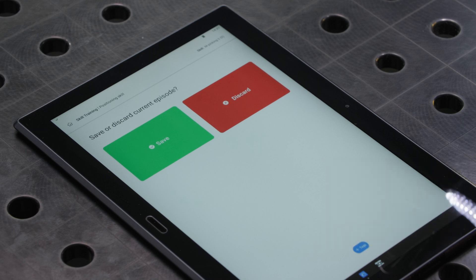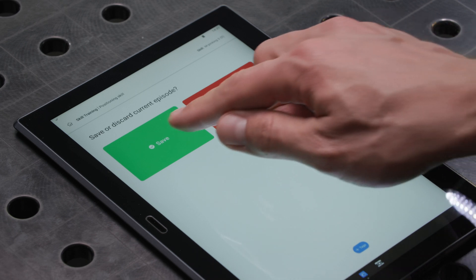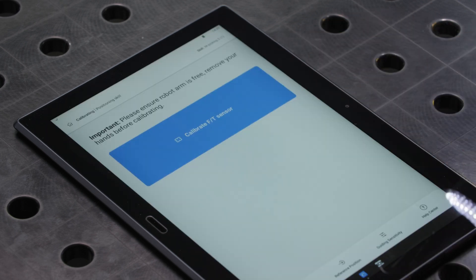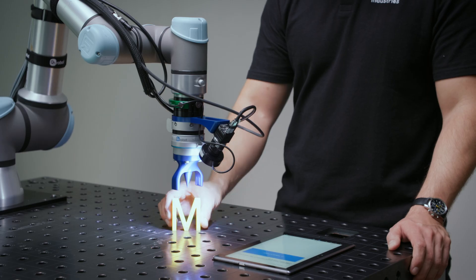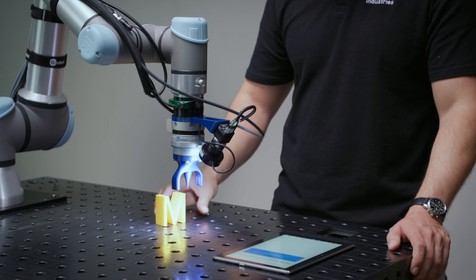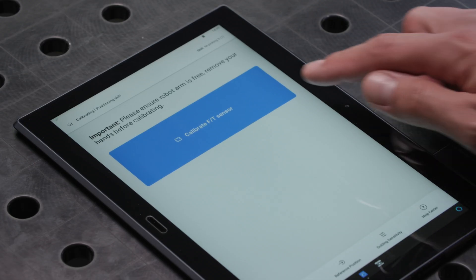Since our episode went smoothly, we'll use it for training. Let's do another episode. We can change the position of the M. Calibrate the force torque sensor.